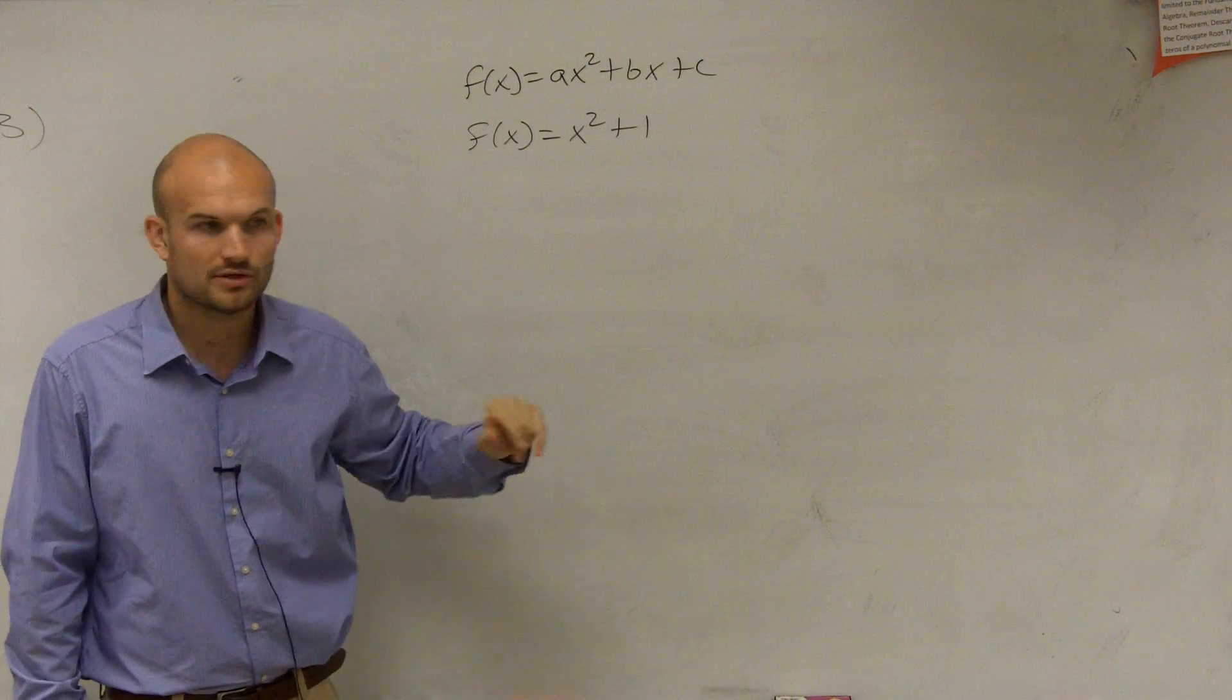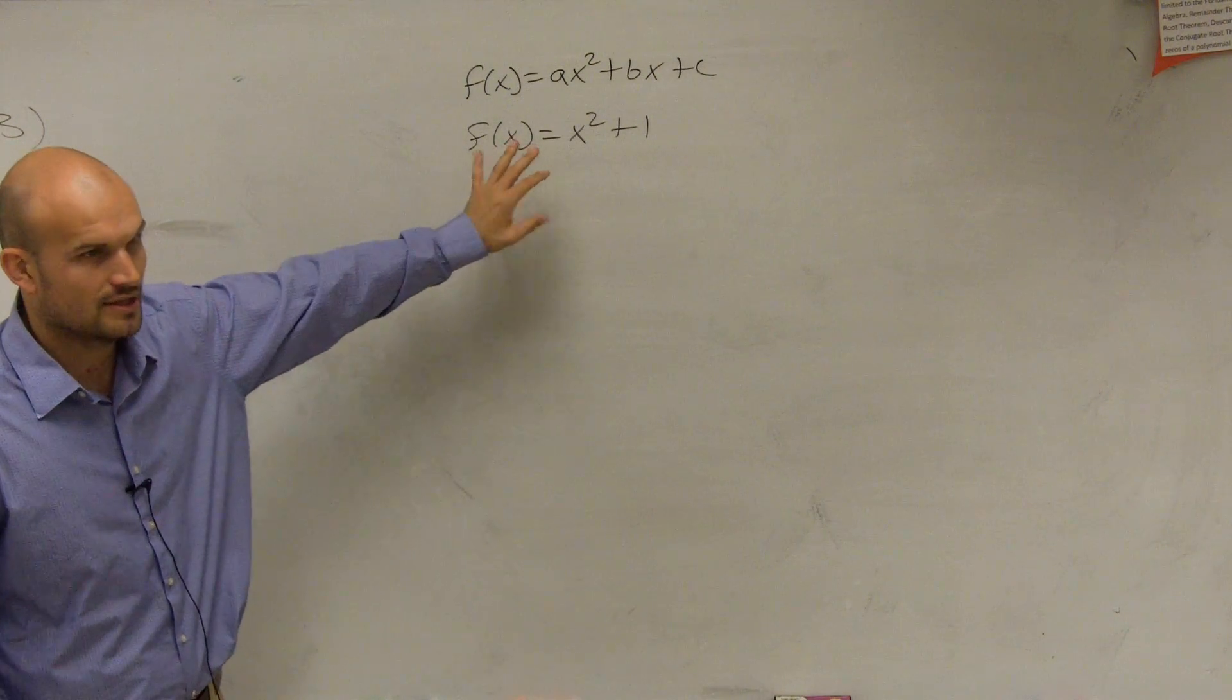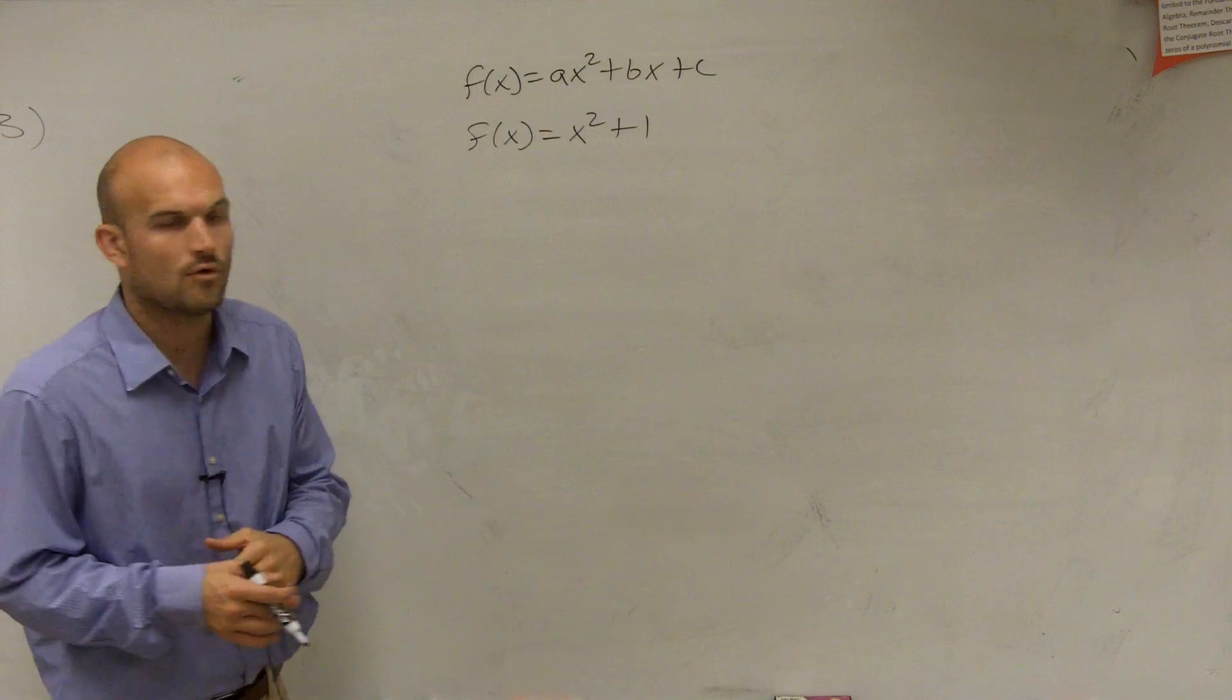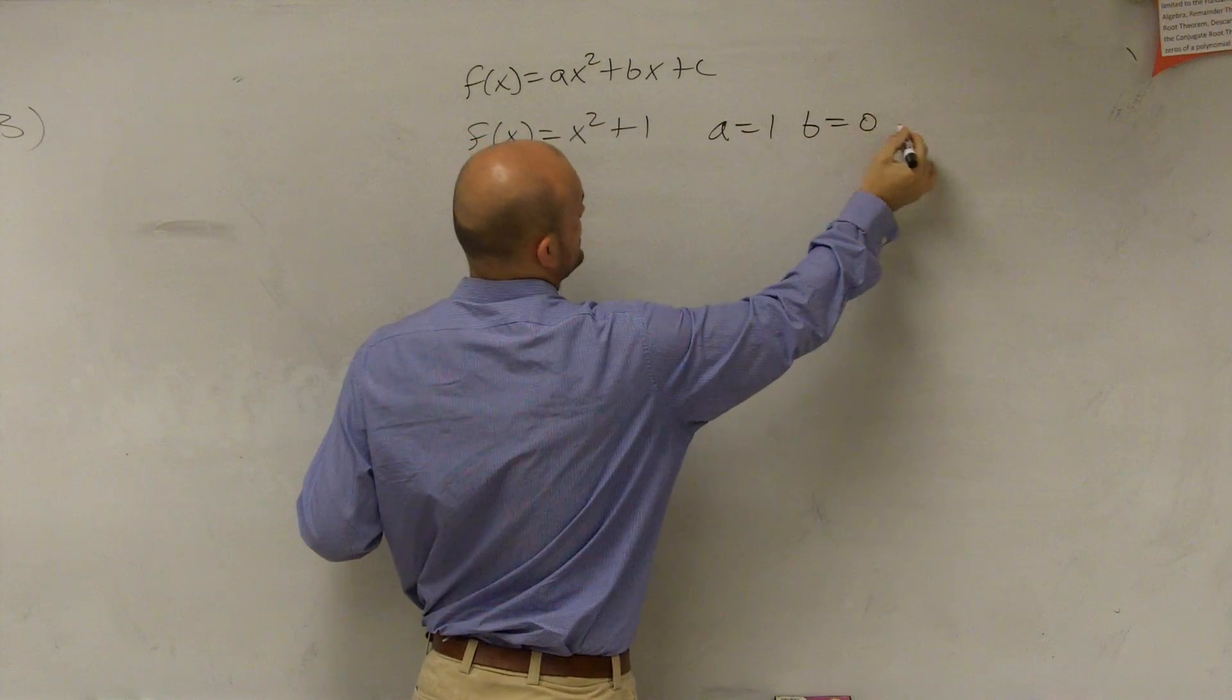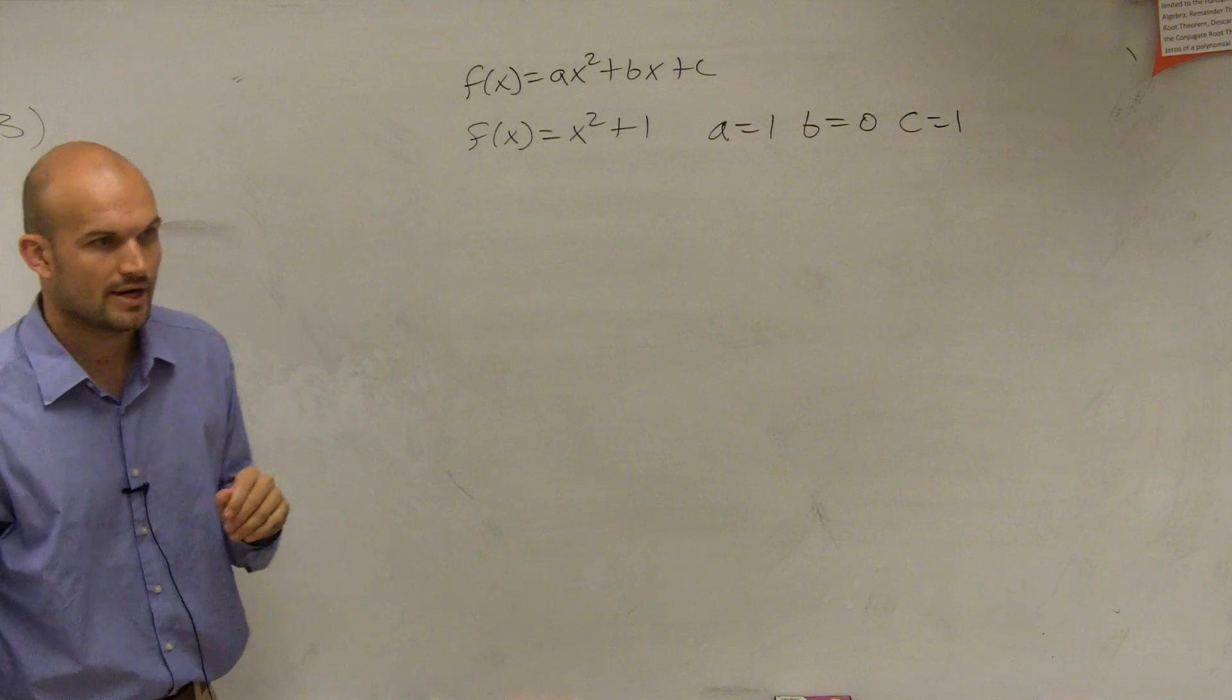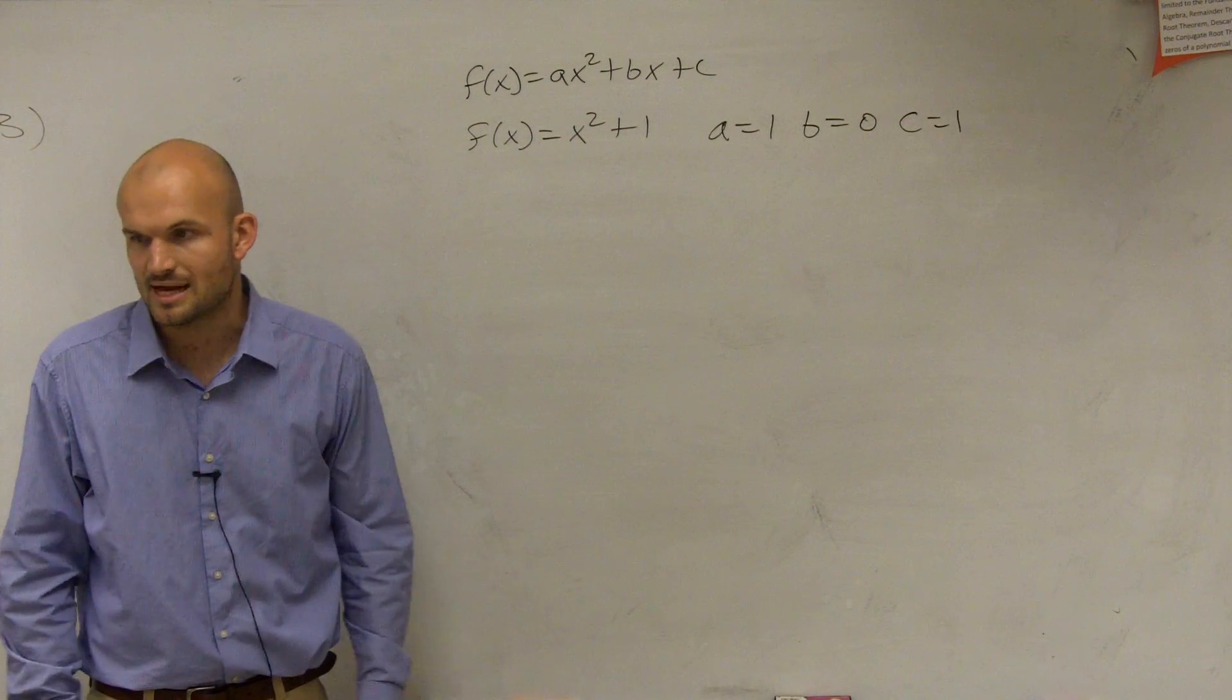Where a, b, and c are real numbers, where a cannot equal 0. Now, this is a quadratic function. So we need to determine what do we have? We have a equals 1, b equals 0, and c equals 1. Because you don't have your linear term x, so you can put a 0 times x.